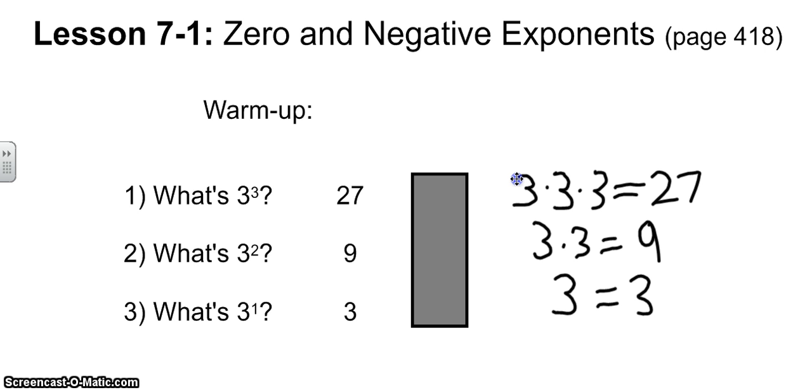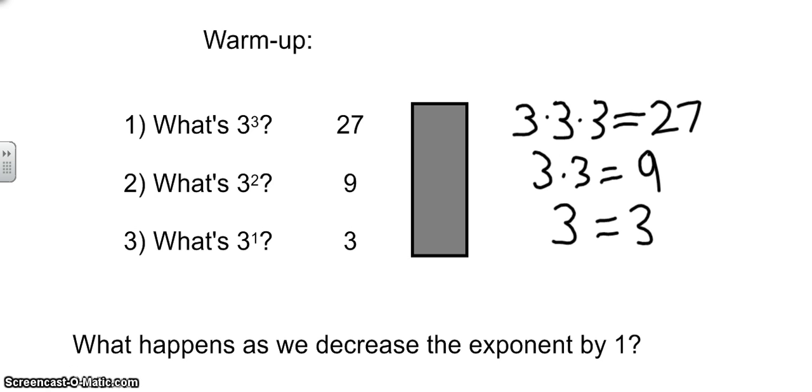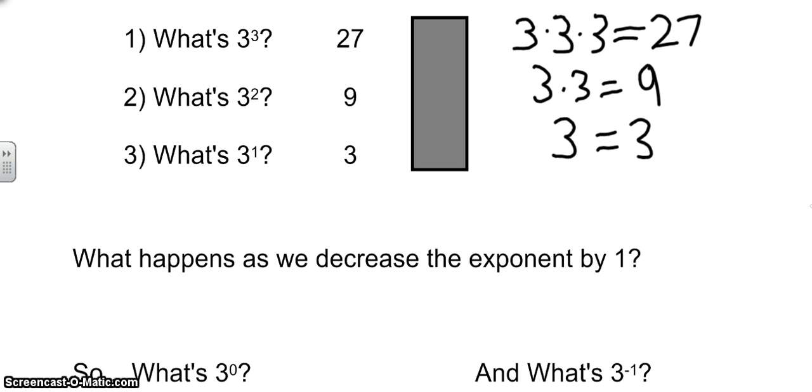Our first job of the day is to decide what is the pattern that we see happening as we decrease the exponent by 1. As I go from 3 to the third down to 3 to the second, 3 to the second down to 3 to the first, what happens to my numbers over there? Hopefully you can see, to go from 27 to 9 to 3, we are dividing each of those numbers by 3.